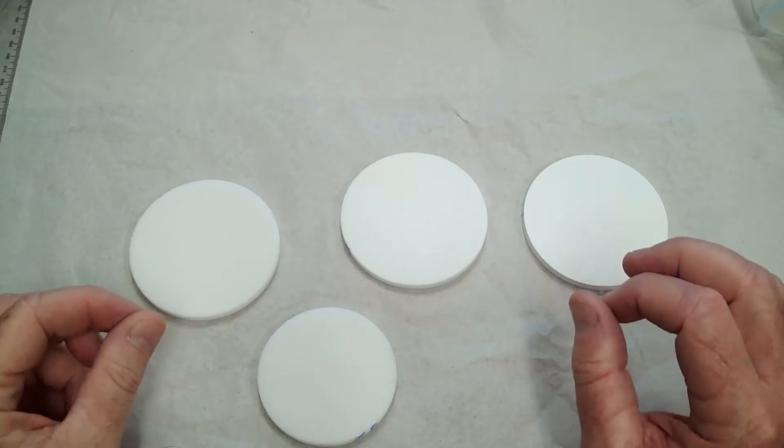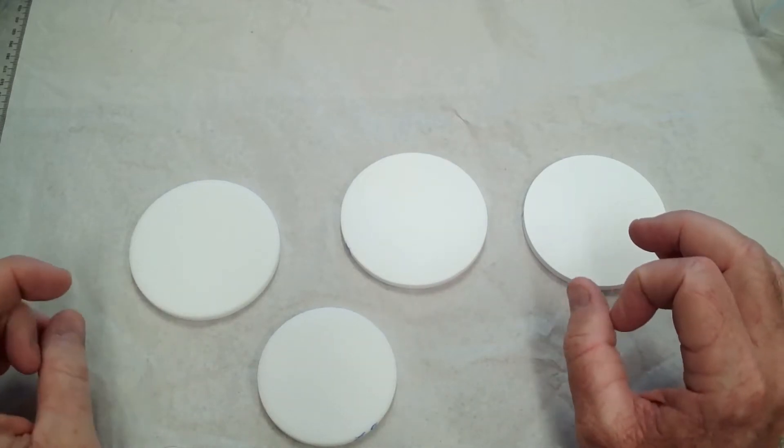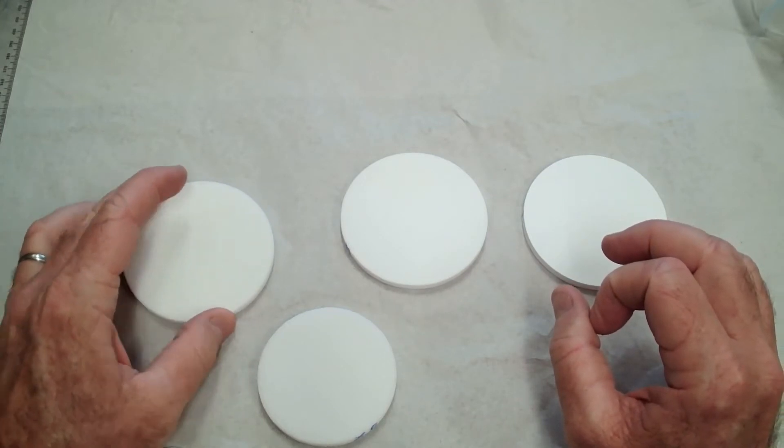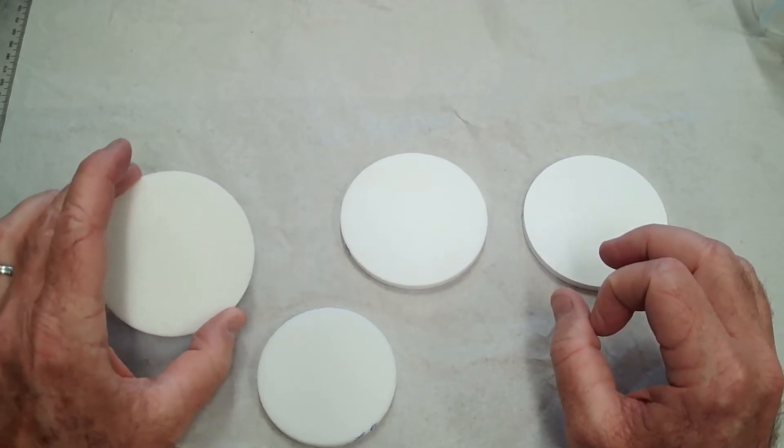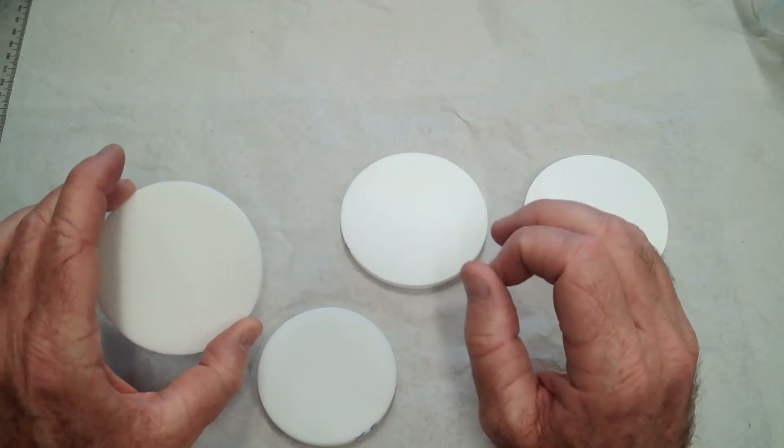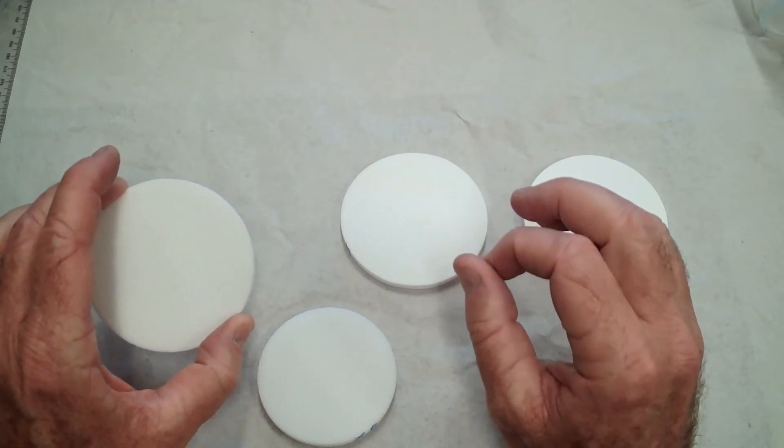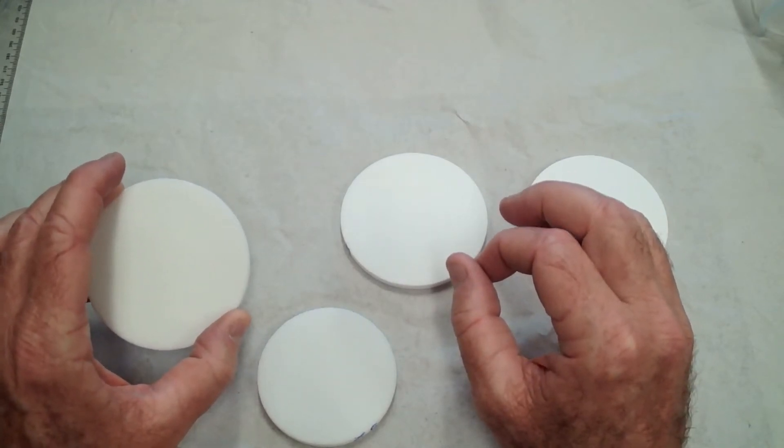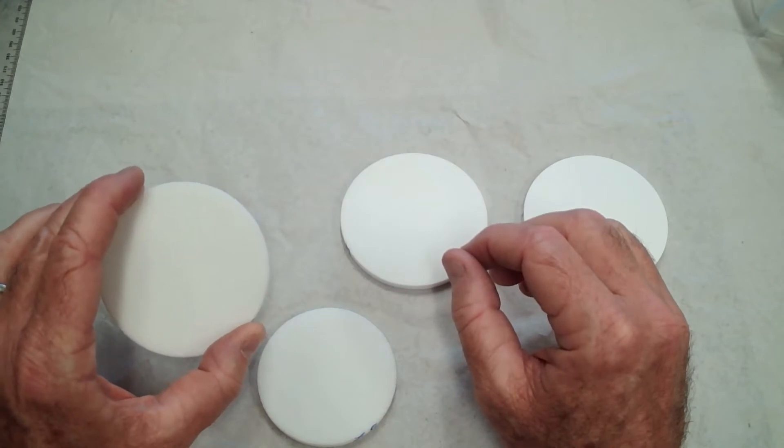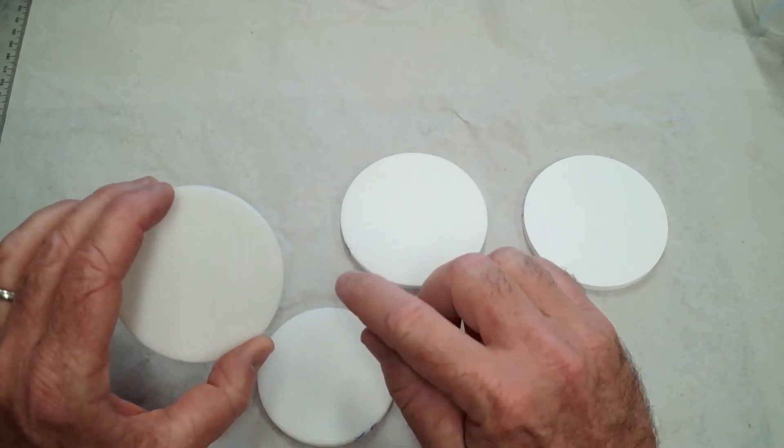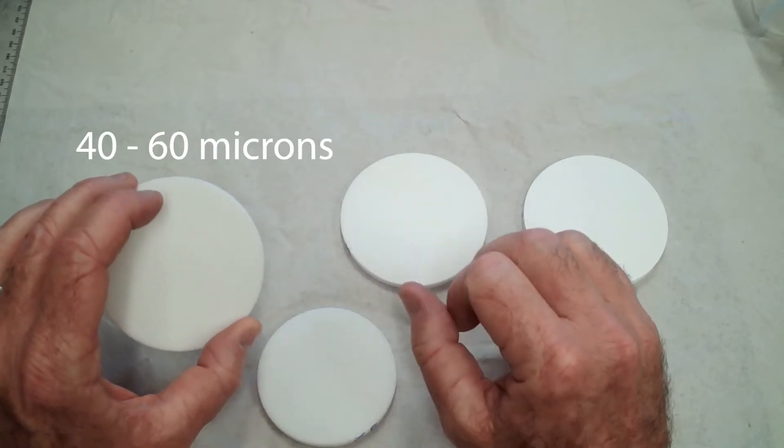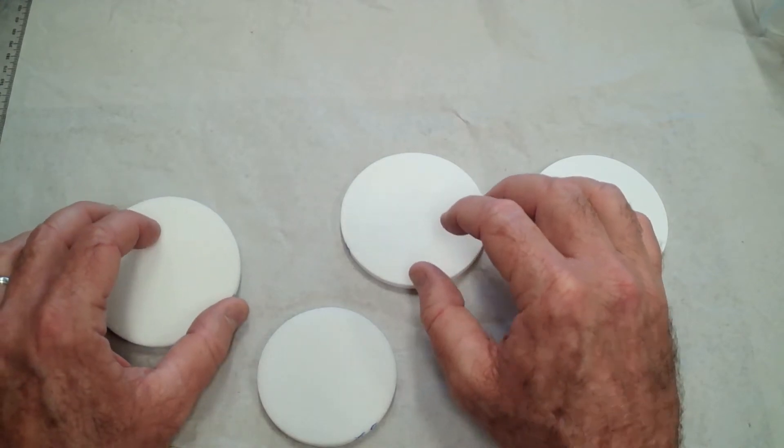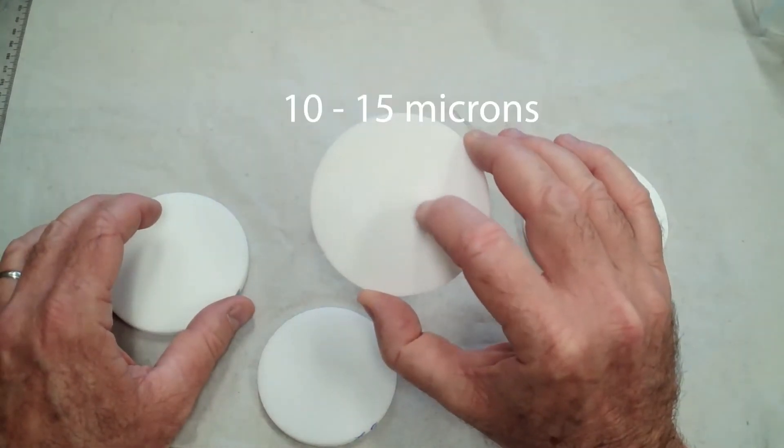You can look in the company catalogs or on the website. They will designate a coarse frit with the hole size in microns. So the coarse frit, the hole size is anywhere from 40 to 60 microns. Medium frit is 10 to 15 microns.